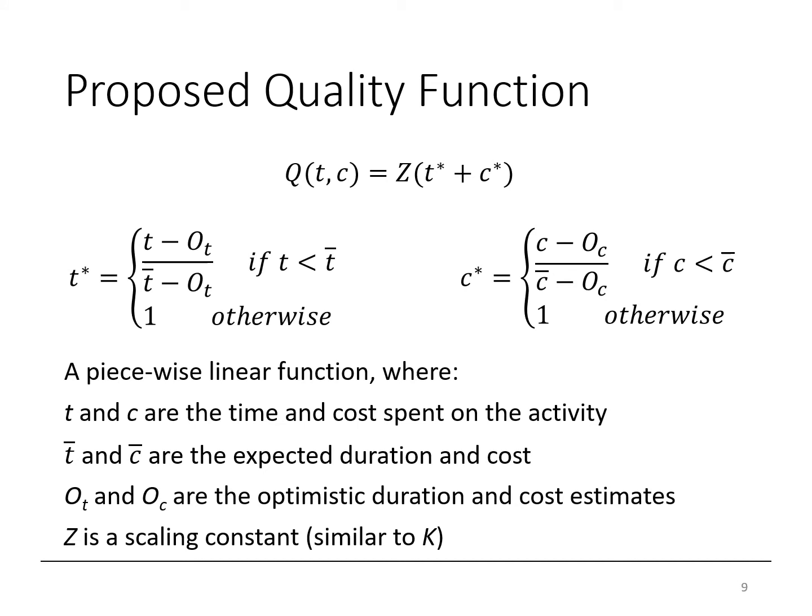Based on these insights, we developed a new quality function. Like the other function, it's a function of time and cost. However, our function is based on the time and cost spent on the activity, the expected duration and cost for that activity, the optimistic duration and cost estimates for the activity, and a scaling constant similar to the variable K in the other quality function. We can get the expected and optimistic durations and cost estimates from a simple three-point estimate, such as the one done in PERT analysis.